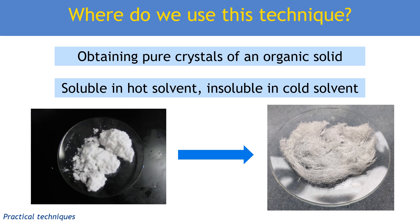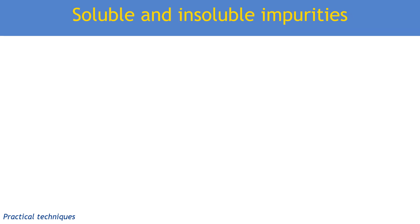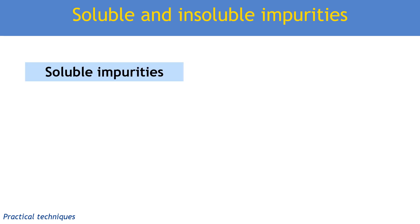What are we trying to remove when we do recrystallization? We have two types of impurities in our reaction mixture: we have soluble, or more soluble, impurities and we have stuff that is more insoluble or pretty much completely insoluble. So let's think about those separately.